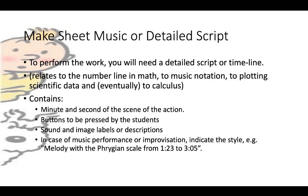To perform the work, you will need a detailed script or timeline. You might want to draw and label an actual number line or timeline — something children learn about in mathematics — and it's related to music notation as well as plotting scientific data. Graphs are closely connected and good preparation for calculus. The script should contain the minute and second of every action, buttons to be pressed by students to initiate sounds and change images, and labels or descriptions of sounds and images. In case of a music performance or improvisation, you can indicate the style — for example, melody with Phrygian scale from 1 minute 23 to 3 minutes and 5 seconds.